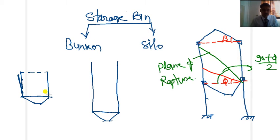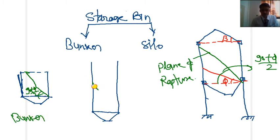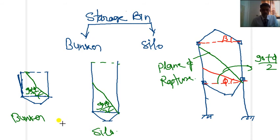If the plane of rupture — which makes an angle of 90 plus phi divided by 2 with the horizontal — intersects the horizontal surface of the filled material, that structure is called a bunker. If the plane of rupture intersects the opposite vertical wall, that structure is called a silo. So for bunker, the plane of rupture intersects the horizontal surface, and for silo, it intersects the opposite vertical wall.